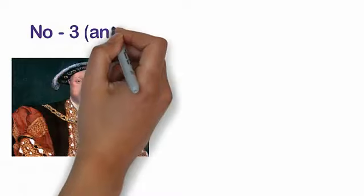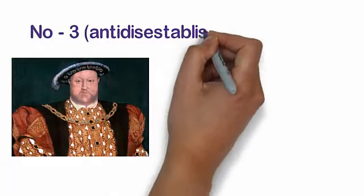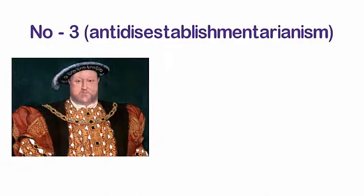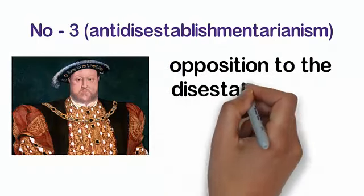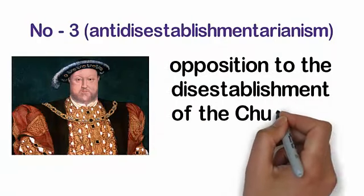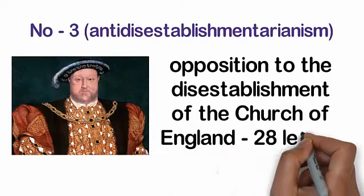Number 3. Anti-disestablishmentarianism. Listen carefully. Anti-disestablishmentarianism. The word has 28 letters. It refers to opposition to the disestablishment of the Church of England.